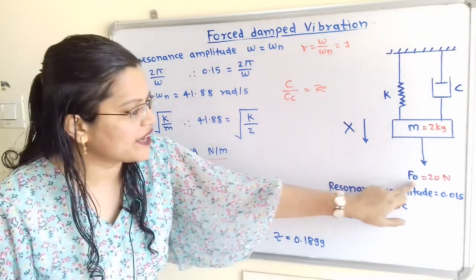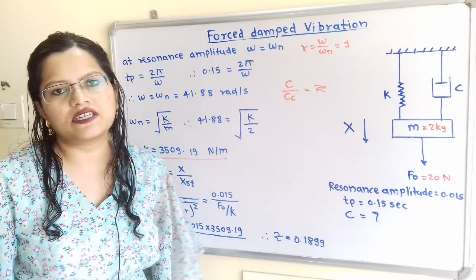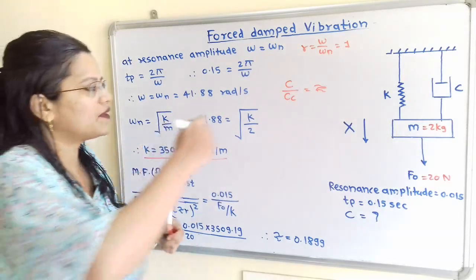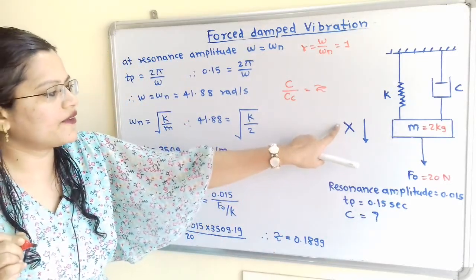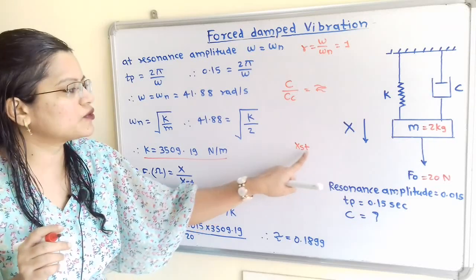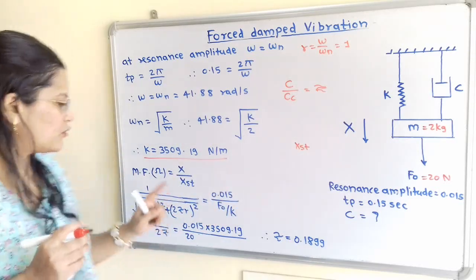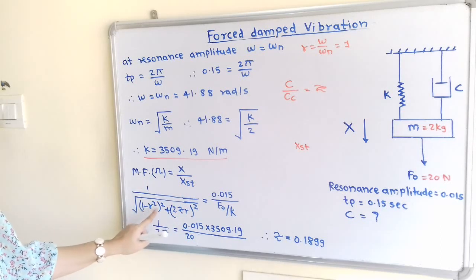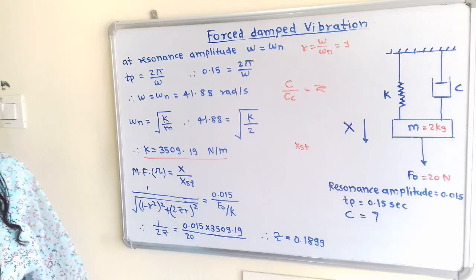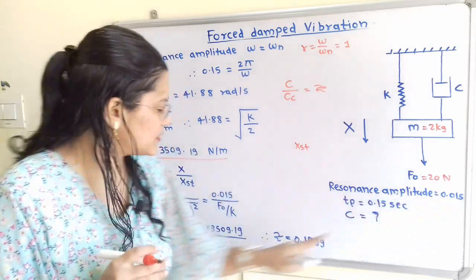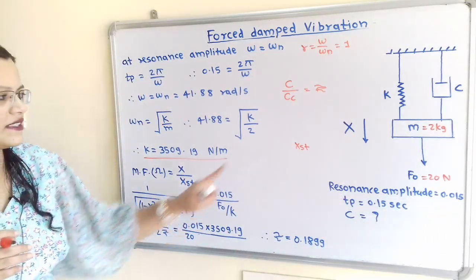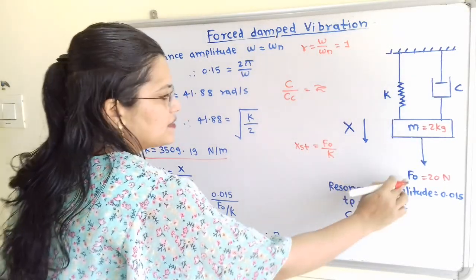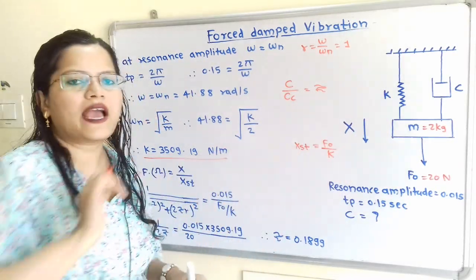Amplitude due to the harmonic force F₀ is the exciting force mentioned in the question. The amplitude due to this harmonic force is X, and amplitude due to static force is X_ST. The magnification factor X/X_ST has the formula: 1 divided by √[(1 − R²)² + (2ζR)²]. Amplitude due to static force X_ST = F₀/K — that is the harmonic excitation force divided by K.